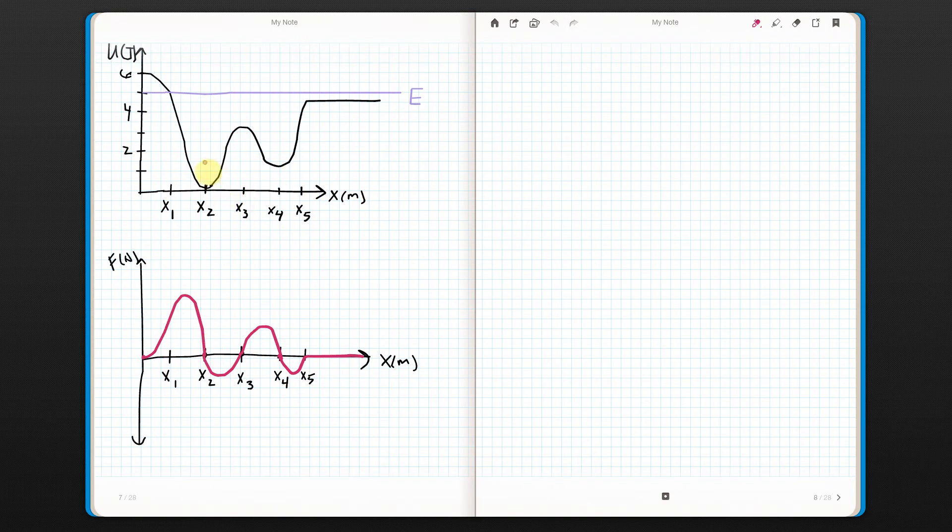So we were just saying that if we had a point on this graph, it could not move to the left of x1 because it can't borrow from kinetic energy.